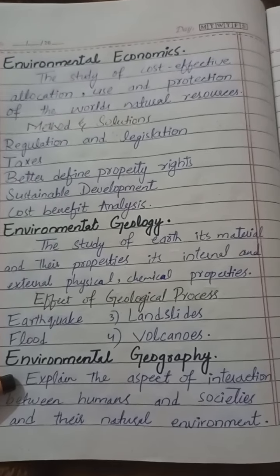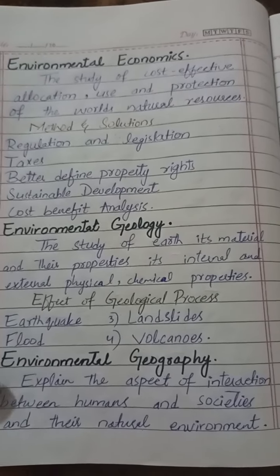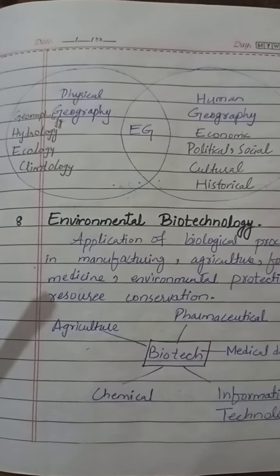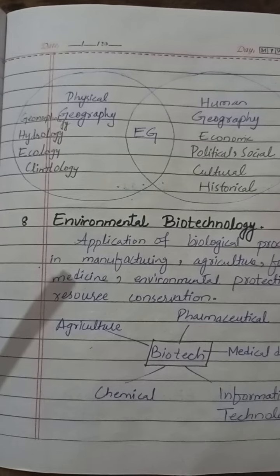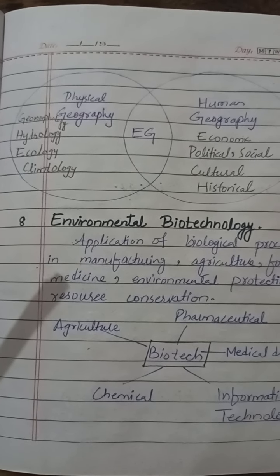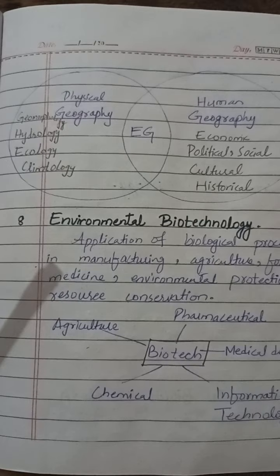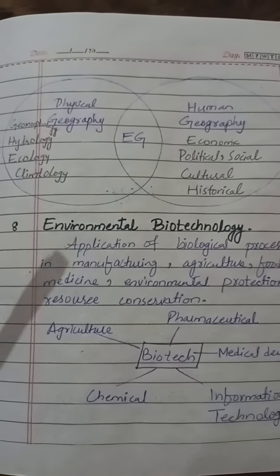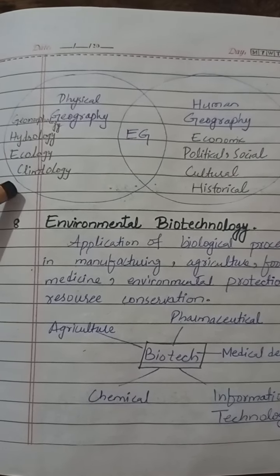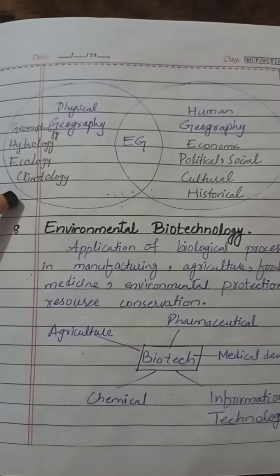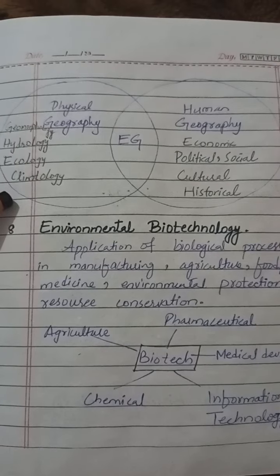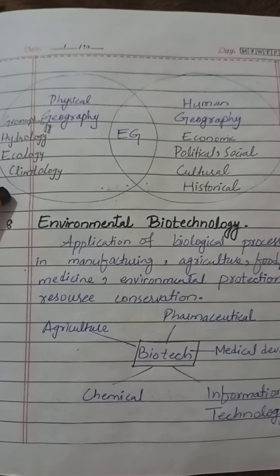Environmental geography explains the aspects of interaction between humans, societies, and their natural environment. It is divided into physical geography — which includes hydrology, ecology, and climatology — and human geography, which covers economics, political, social, cultural, and historical aspects.